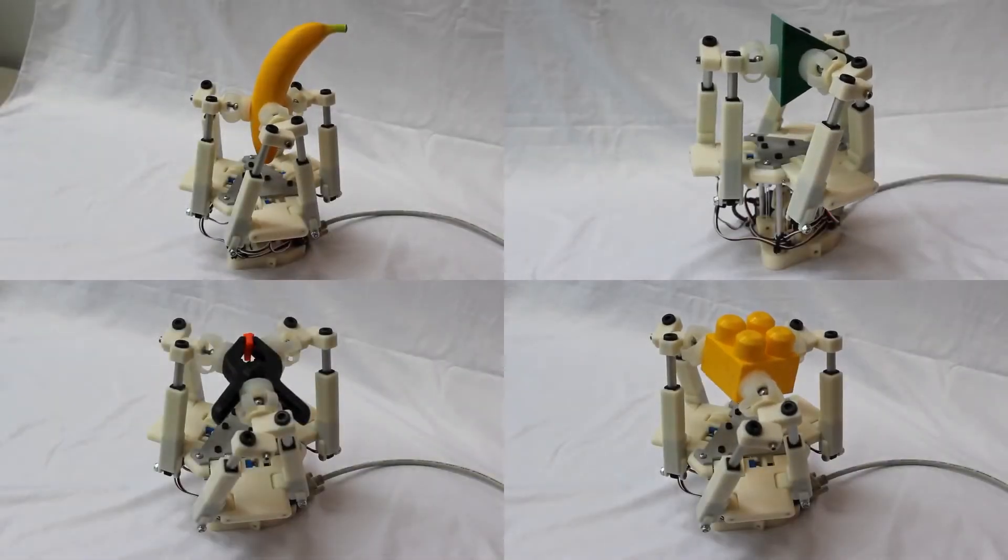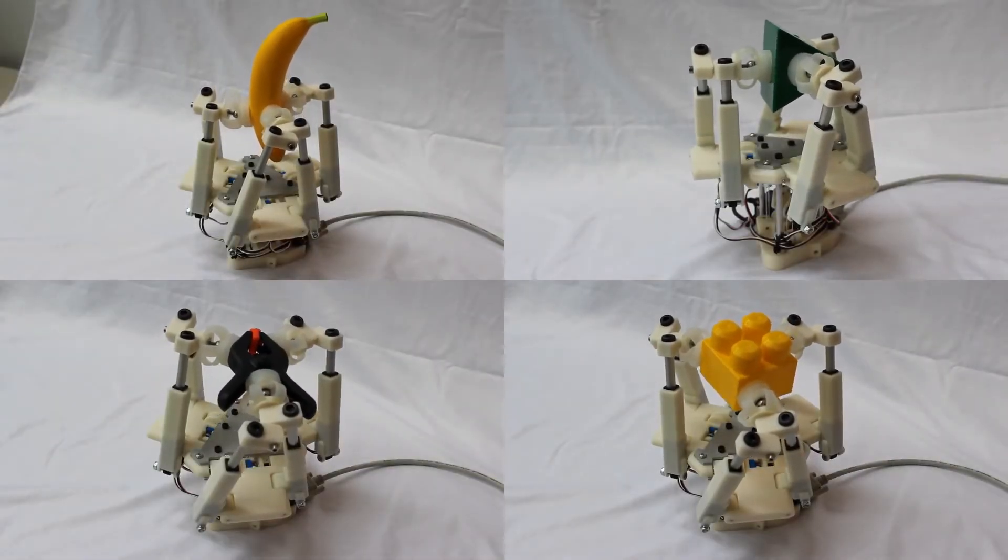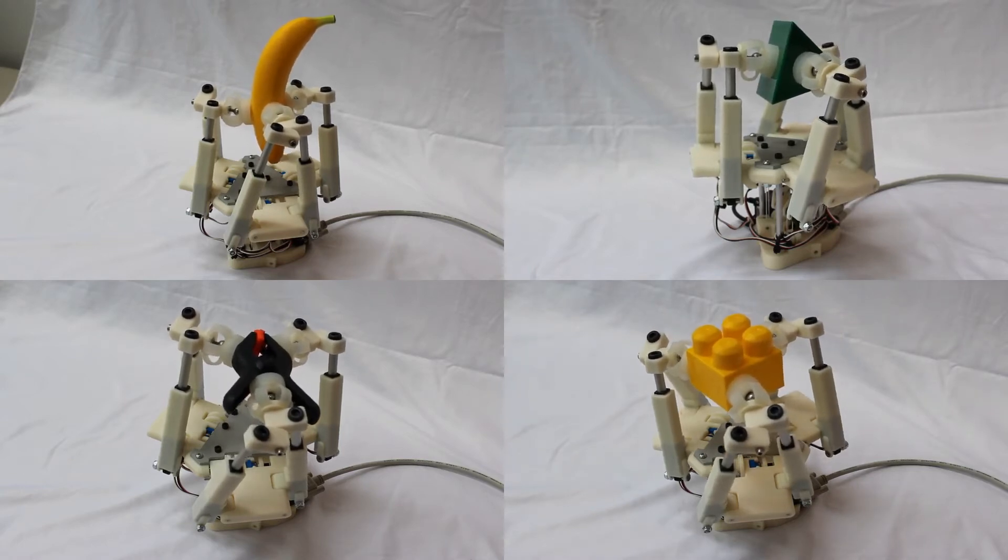We next show a series of tele-operated demonstrations with this prototype, beginning with a set of random motions executed using objects from the YCB object set. As you can see here, the hand is capable of dexterously manipulating a range of object shapes and sizes.